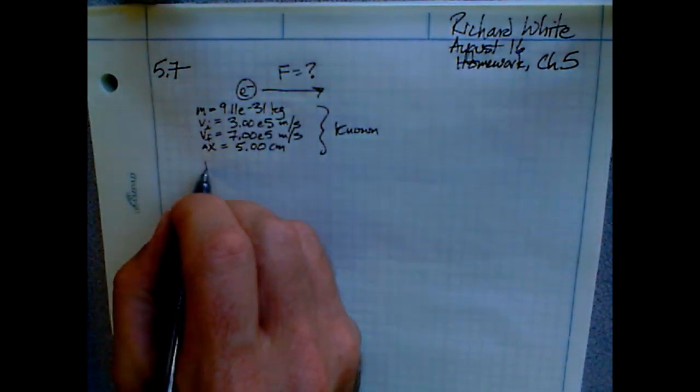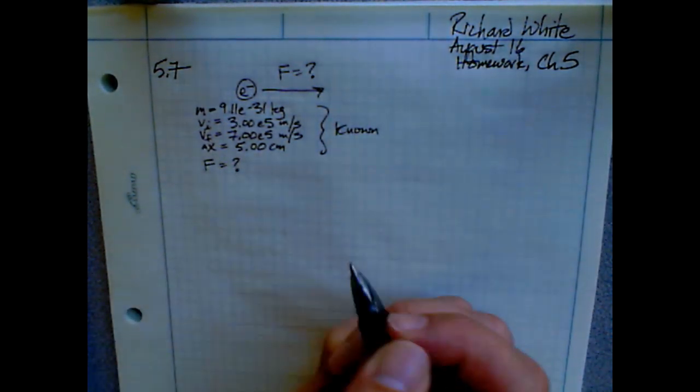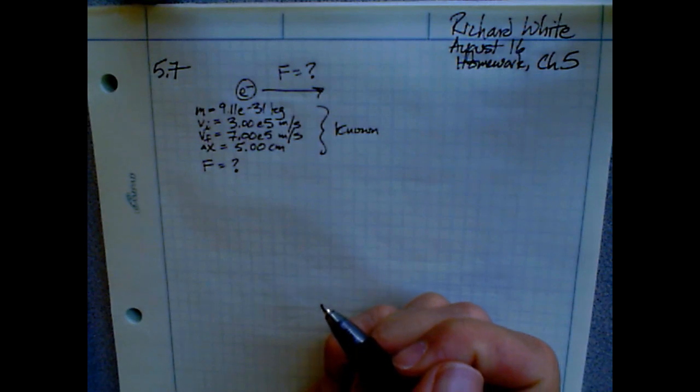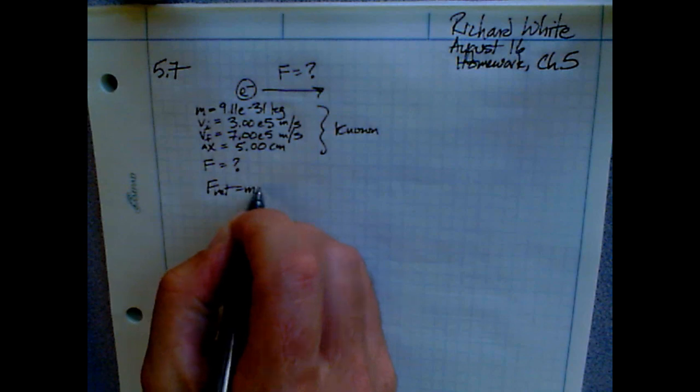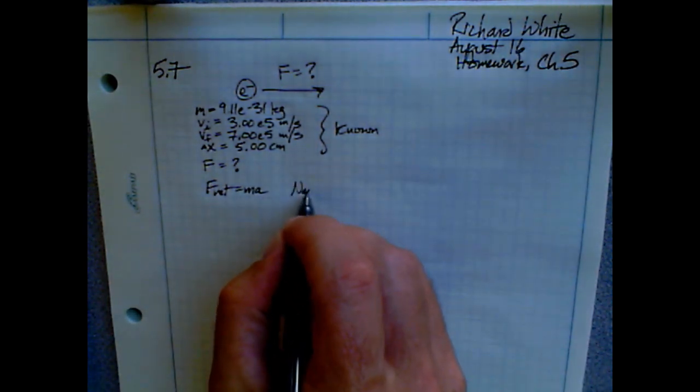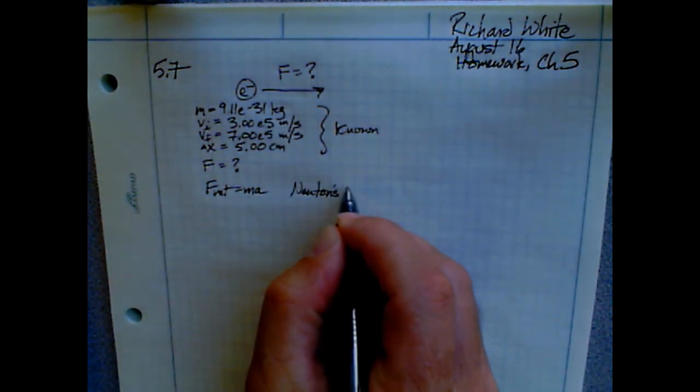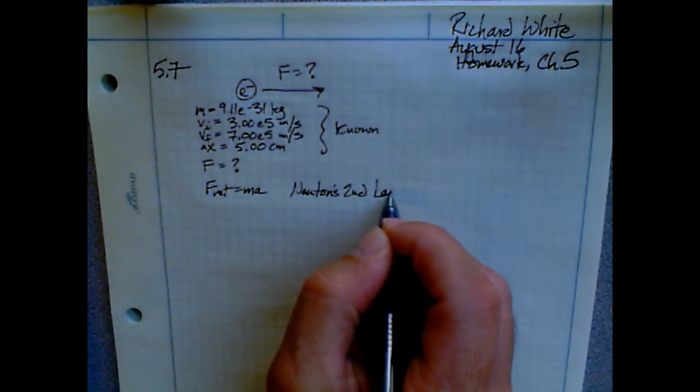Let's also identify the unknown quantity that we're trying to find. Now determine what concept or technique you're going to use to solve the problem. Based on the fact that this problem is for a homework unit on Newton's laws, it should be relatively easy for me to identify what technique or formula I'll be using to analyze this.